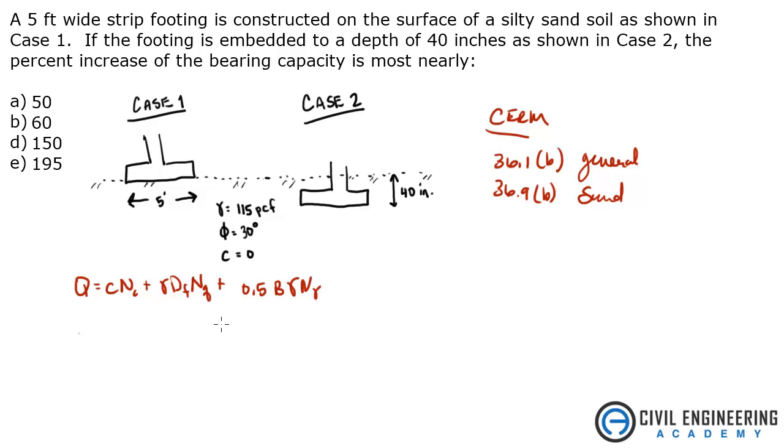Alright, so that's the equation we're going to use. So let's go ahead and solve for the first case, I'll call it q1. So case one, what we have for case one is zero cohesion, cohesion is zero, so this goes away.